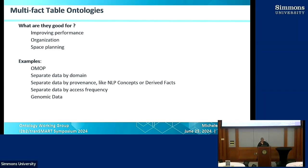It's a great way to organize different types of data — data of different provenance. You may put all your NLP concepts in one fact table while keeping all your EHR data in another. It's used for the OMOP implementation of i2b2. You can separate things by domain as Mayo has done, keep derived facts in a separate table, or separate by access frequency to improve performance — you're not scanning all facts just to get one thing.